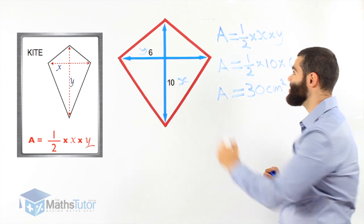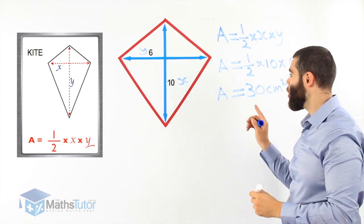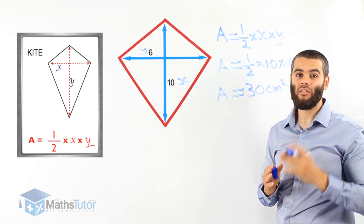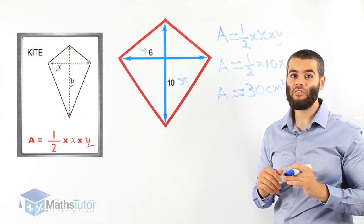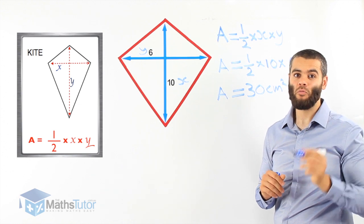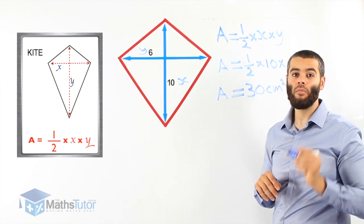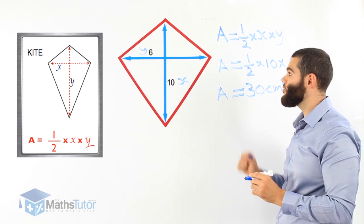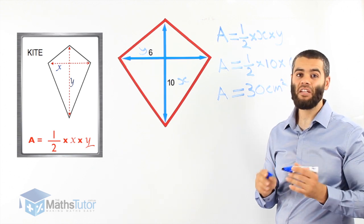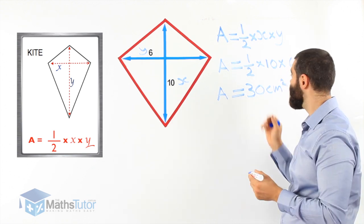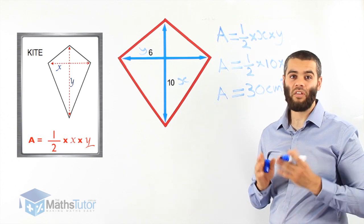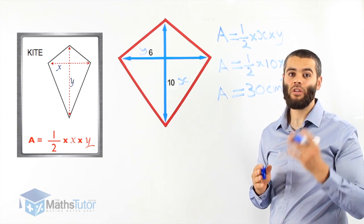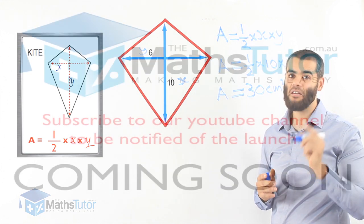30 square centimetres is the area of the kite. Always remember the formula — half times x times y is the area of the kite and the area of the rhombus. As I always tell my students: remember your formulas. Without them you can't get any of these correct. You need to remember them all the time. The area of the kite and the area of the rhombus are easy — they have the same formula: half times x times y.